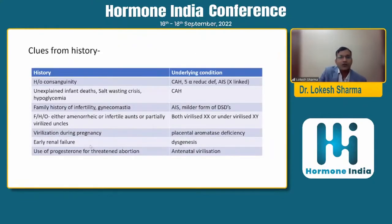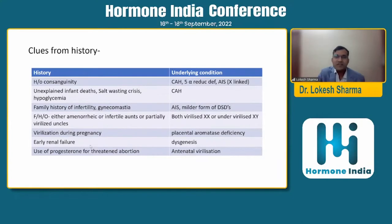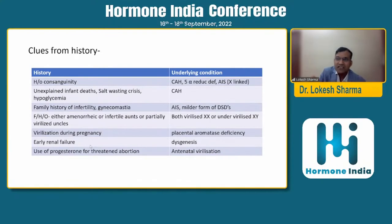Clues from history: consanguinity suggests inheritable disorders like CAH or 5-alpha-reductase deficiency. Unexplained infant death in siblings should raise concern for undiagnosed salt-wasting crisis. Family history of infertility, gynecomastia, amenorrheic aunts, or incompletely virilized uncles may indicate a milder form of DSD. Virilization during pregnancy gives a clue for placental aromatase deficiency, early ovarian failure suggests gonadal dysgenesis, and prolonged progesterone treatment during pregnancy may cause antenatal virilization.